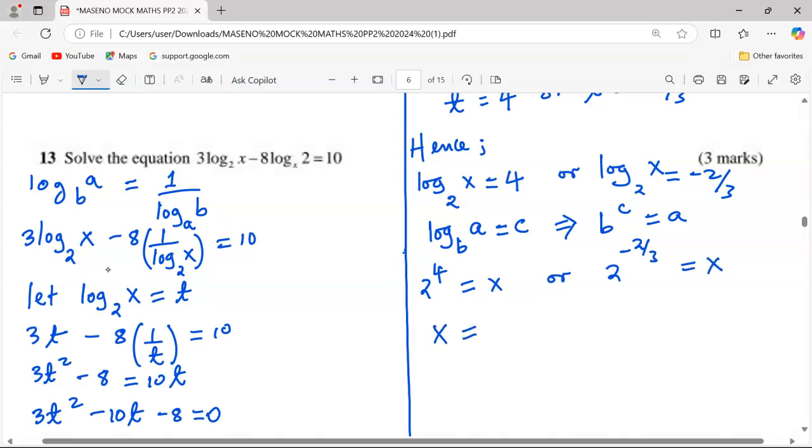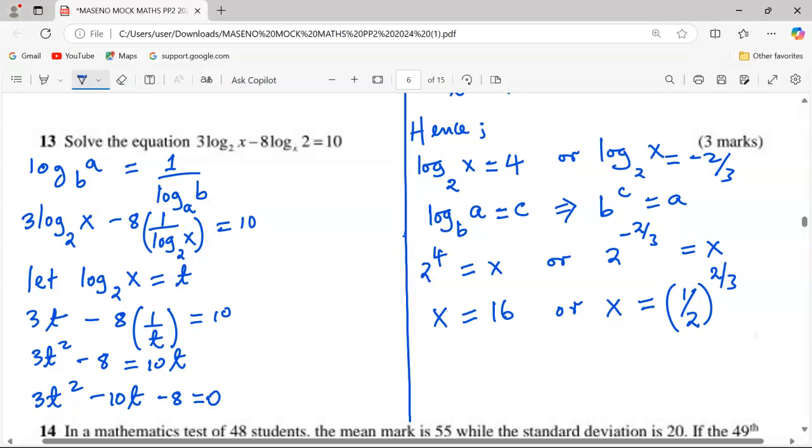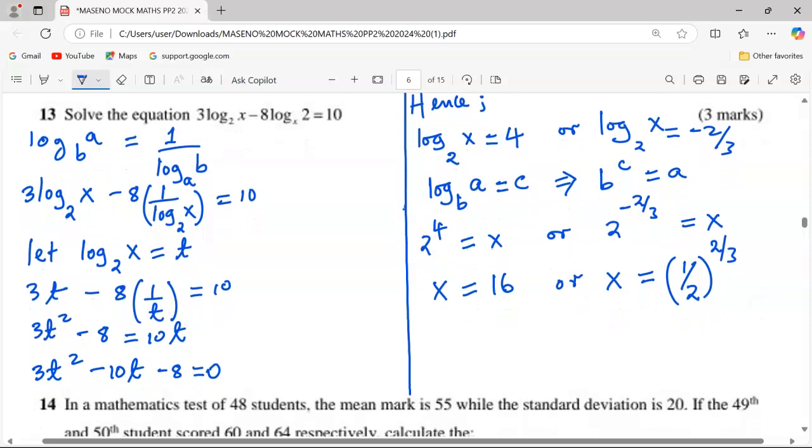In the first case, the value of x will be 16. And in the second case, the value of x will be, if we apply the laws of indices now, we have to take the reciprocal of 2, then the power becomes positive. That is what we call the negative law of indices.